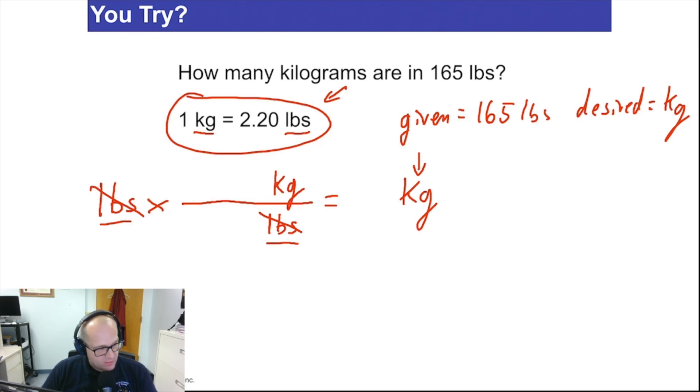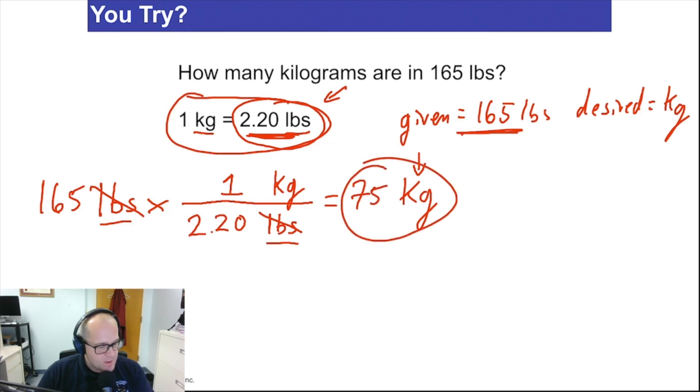So this question became really easy. Now, where does the 2.20 go? It always follows its unit, right? 2.20 pounds goes here. 2.20. It's here. And now it's down here. Make sure you get that. That's important. And the number one comes up here. And the given, 165, goes right there. So take out your calculator. 165 divided by 2.2. 75 kilograms.